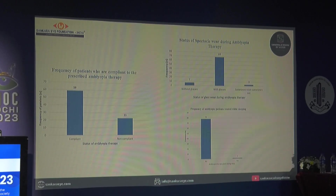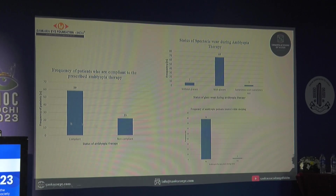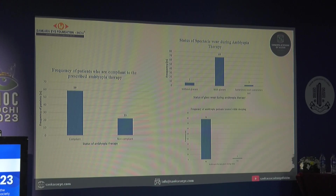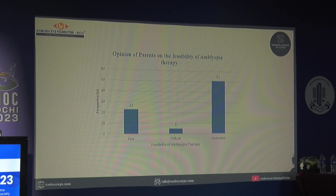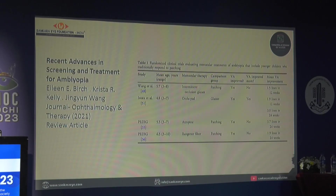We did a small survey on compliance. About two-thirds were compliant with the prescription. Surprisingly, almost 10 percent did not wear their glasses or wore them whenever they wanted. A small set of children even occluded their eyes while sleeping — meaning neither the child nor the parent understood the treatment regimen. When asked, very few said it was easy; most were undecided, meaning they were politely telling us we had made their life difficult.